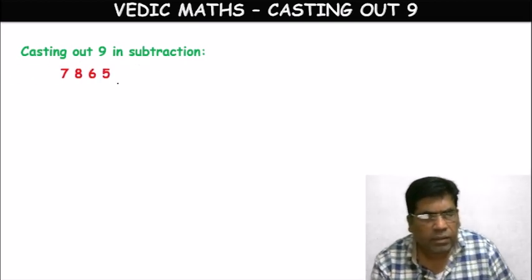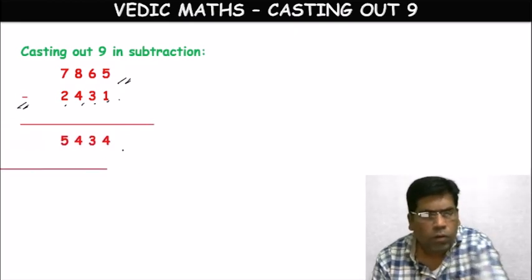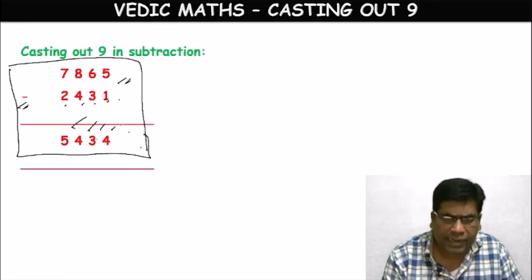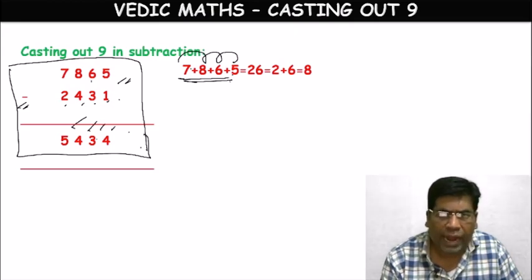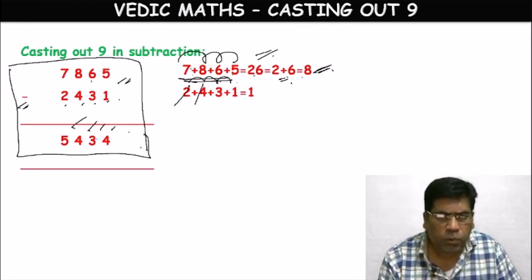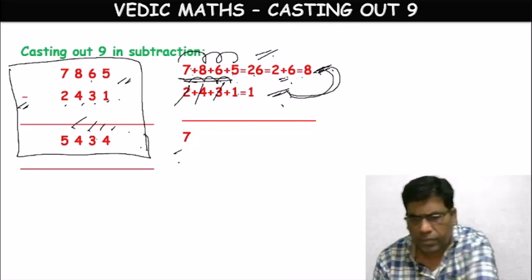Casting Out Nines in subtraction. Suppose the number is 7865 and another number is 2431. We have to subtract them. Suppose the answer is 5434. For the first number 7865: 7+8+6+5, no possibility of 9. 7+8=15, 15+6=21, 21+5=26. Then 2+6=8. For the second number 2431: 2+4+3+1 — 2+4=6, 6+3=9, cast it out. Remaining: 1. So the second number condenses to 1.